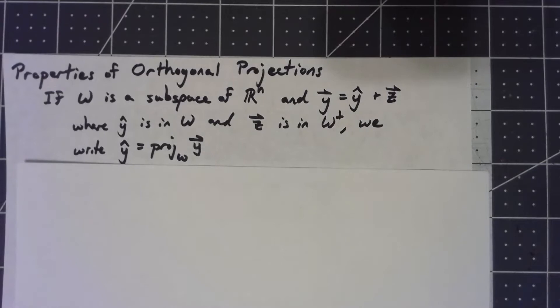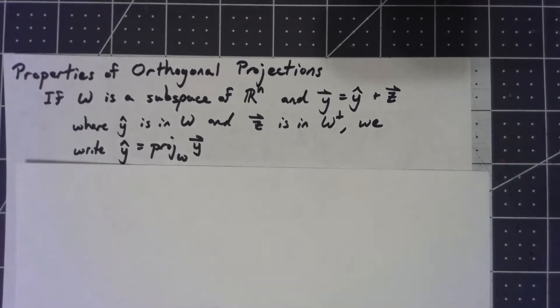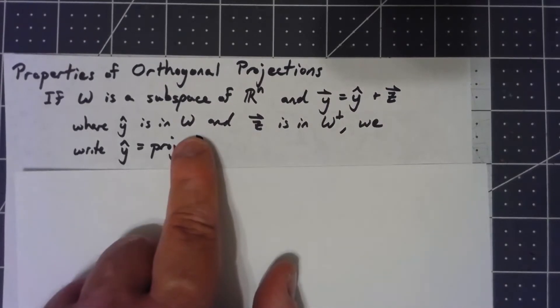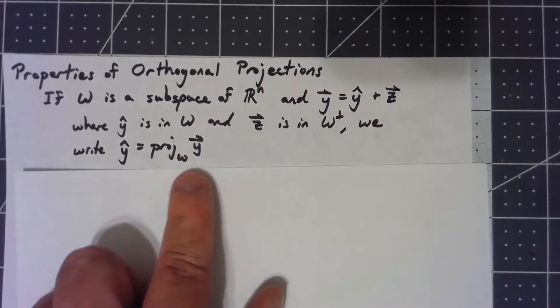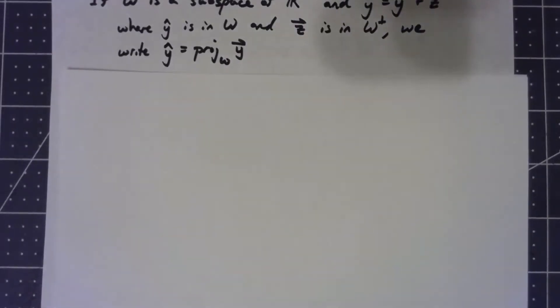Now that we know how to do orthogonal decomposition, let's modify some notation and see some consequences of that projection. We're going to borrow from the projection onto a vector that we did a couple videos back. If we can do this orthogonal decomposition, we'll call the y-hat part, the part that's in W, the projection onto the subspace W of the y vector. A little bit of notation sometimes makes things easier.